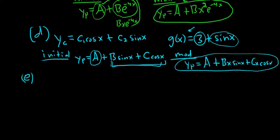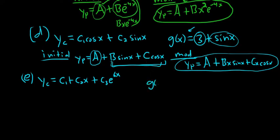Example E. Yc equals C1 plus C2 x plus C3 e to the 6x — that's the complementary function. And in this case, g of x is equal to 2 minus cosine x.